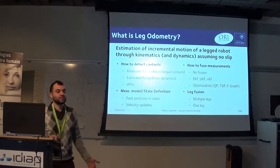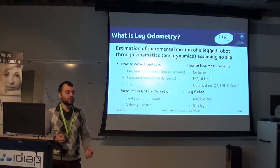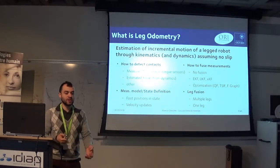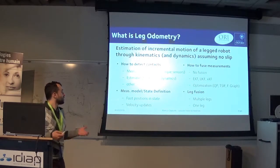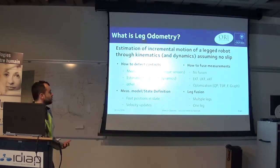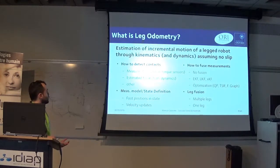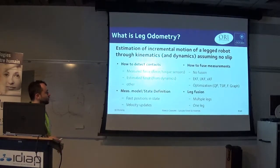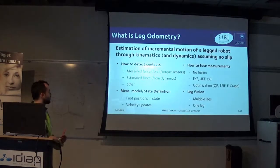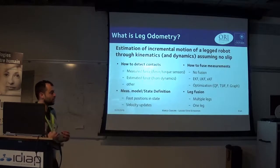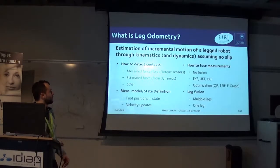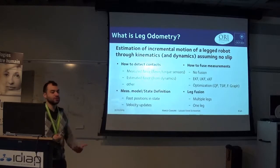Of course, the no-slip assumption is required, because otherwise there is no way to measure the relative velocity between the end effector and the ground. There are many ways to categorize state estimators. We can distinguish them on how you measure contacts, how the state is defined, how the IMU and leg odometry measurements are fused together, and how many legs you want to fuse together.